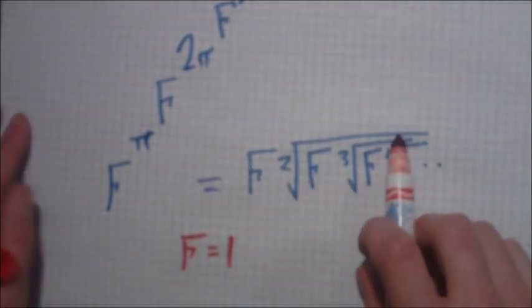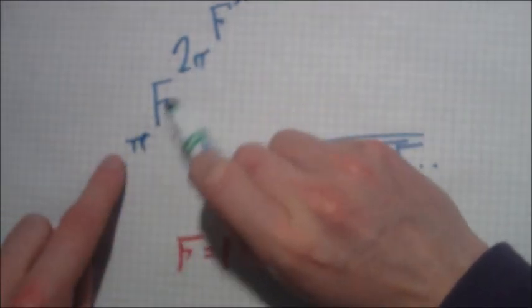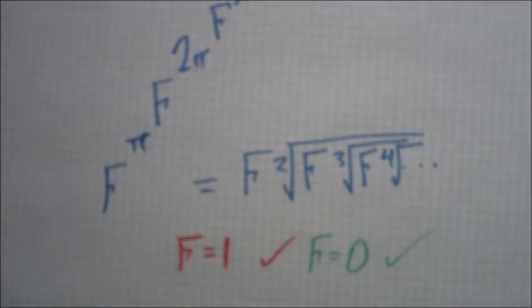As we can see, setting wow equal to one solves this. What about if we set wow equals zero? Wow to the 2pi is one, pi to the one is pi, and then zero to the one is again going to be zero, and then zero on the right side. So zero is also clearly a valid solution.